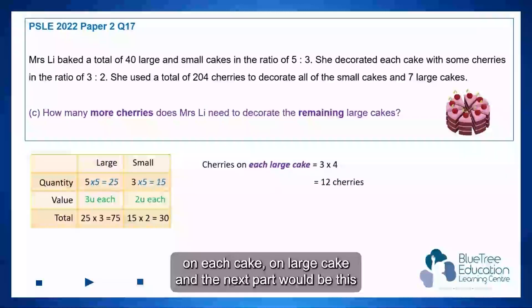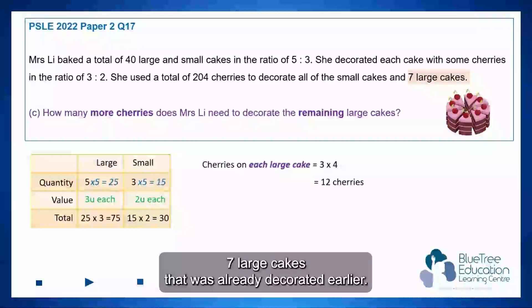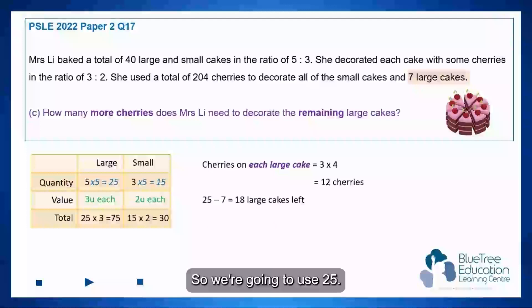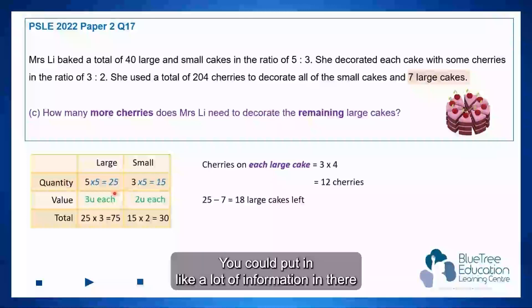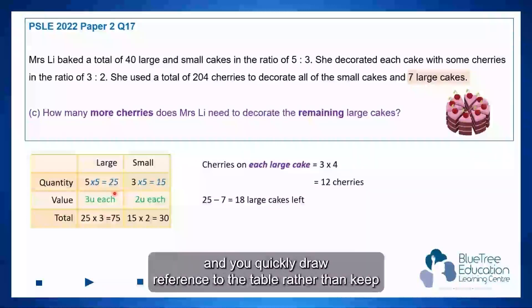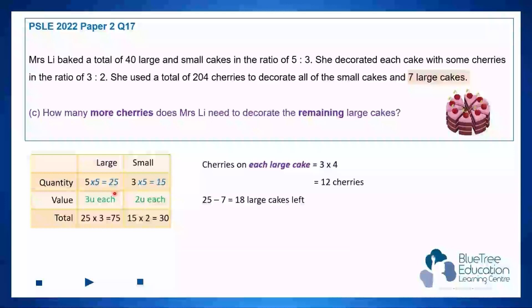And the next part would be this 7 large cakes that was already decorated earlier. So we're going to use 25 from the table over here. That's why that table is so useful, you could put a lot of information in there, and you quickly draw reference to the table, rather than keep reading the math problem with limited information given.